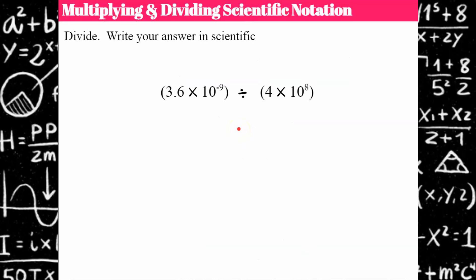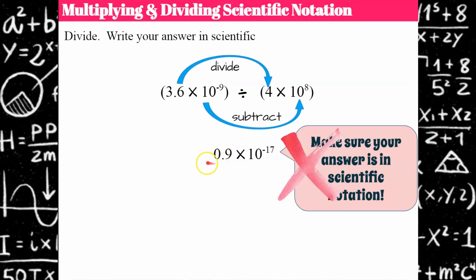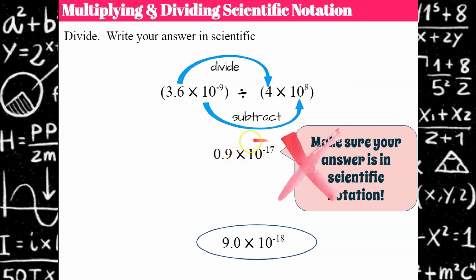Your turn — divide the factors and subtract the exponents using the quotient property for exponents. Welcome back. 3.6 divided by 4 is 0.9, and then subtracting the exponents: negative 9 minus 8 is negative 17. But 0.9 times 10 to the negative 17 is not in scientific notation — I need a significant digit to the left of the decimal. Moving the decimal one place to the right makes the factor larger, so the power of 10 gets smaller by one. Negative 18 is one smaller than negative 17, so the answer is 9 times 10 to the negative 18.